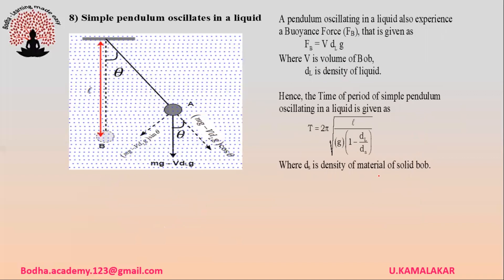Simple pendulum oscillating in a liquid also experiences a buoyancy force. Buoyancy force Fb = V·d_L·g, where V is the volume of the bob inside the liquid and d_L is the density of the liquid. Hence, the time period is T = 2π√(l / (g(1 − d_L/d_S))), where d_L is the density of the liquid and d_S is the density of the solid bob.